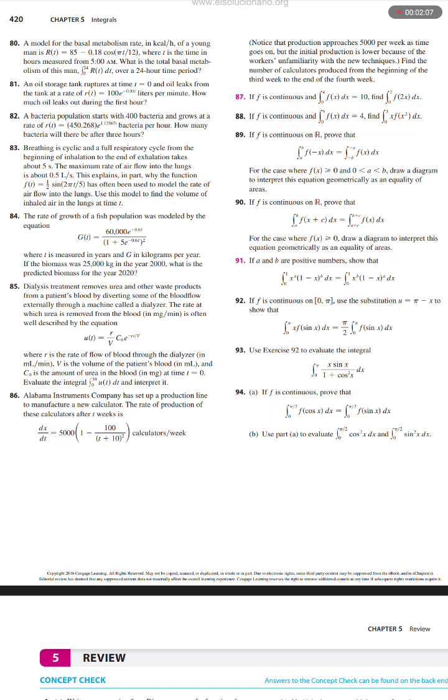A bacteria population starts with 400 bacteria and grows at a rate of r(t) equals 450.268 e to the power 1.12567t bacteria per hour. How many bacteria will be there after three hours?